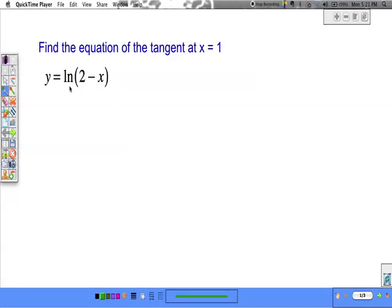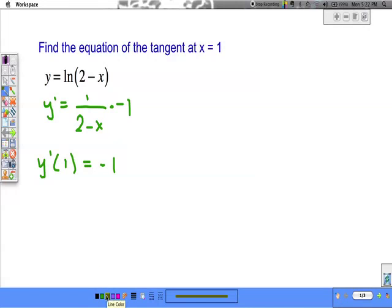Well, in order to find the equation of a line, we need its slope. Slope leads us to find the derivative. And we want the derivative when x is 1. So if I plug in x equals 1, we get that this slope is negative 1. We've got the slope. Now what? Well, we also need a point on the line.